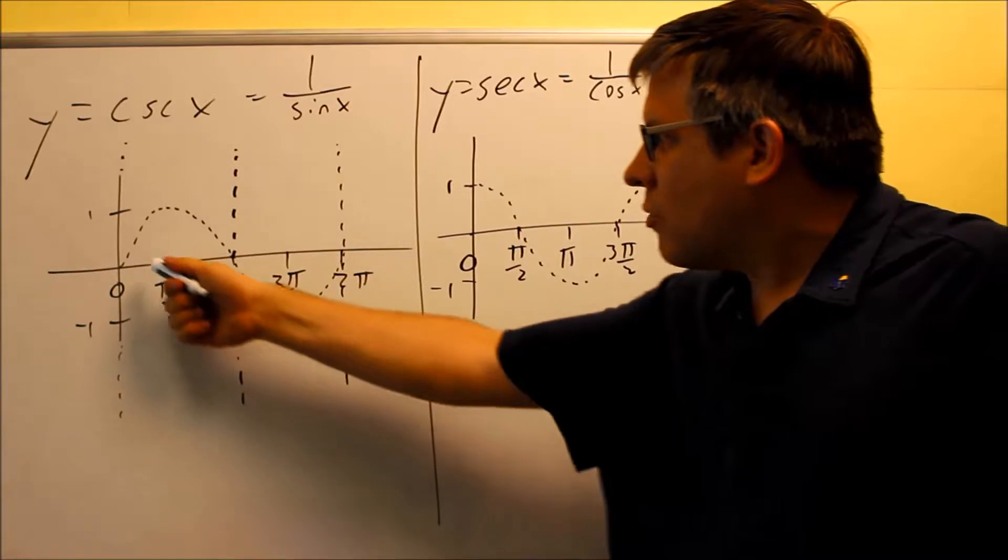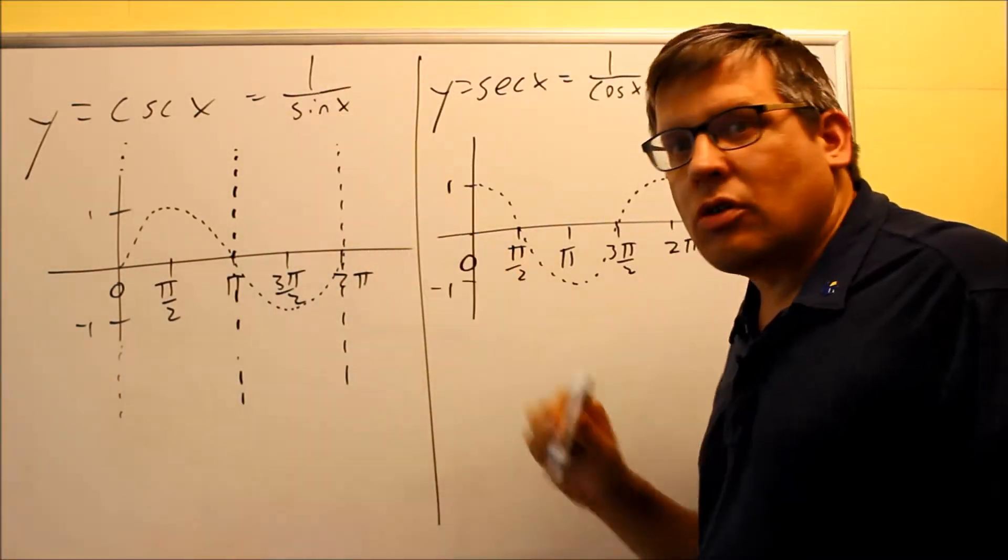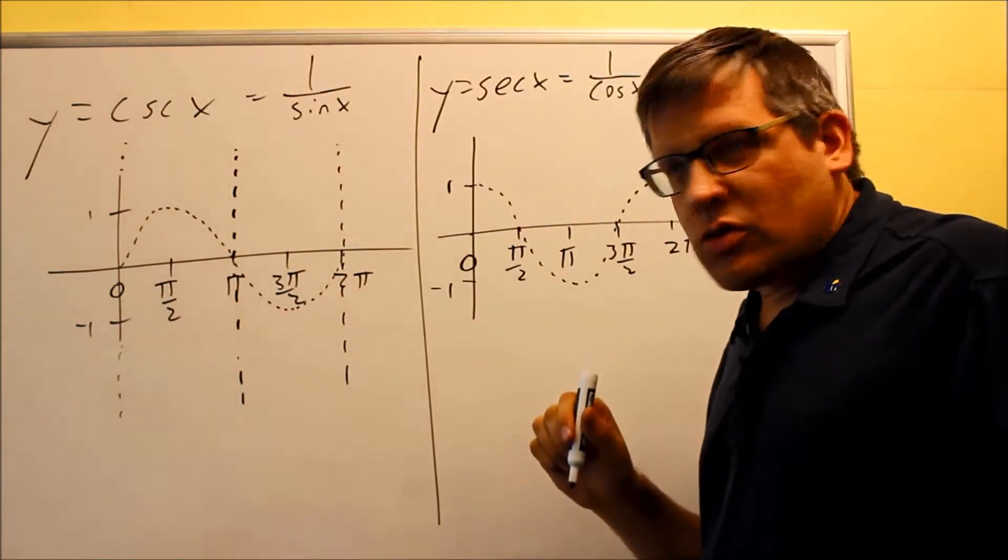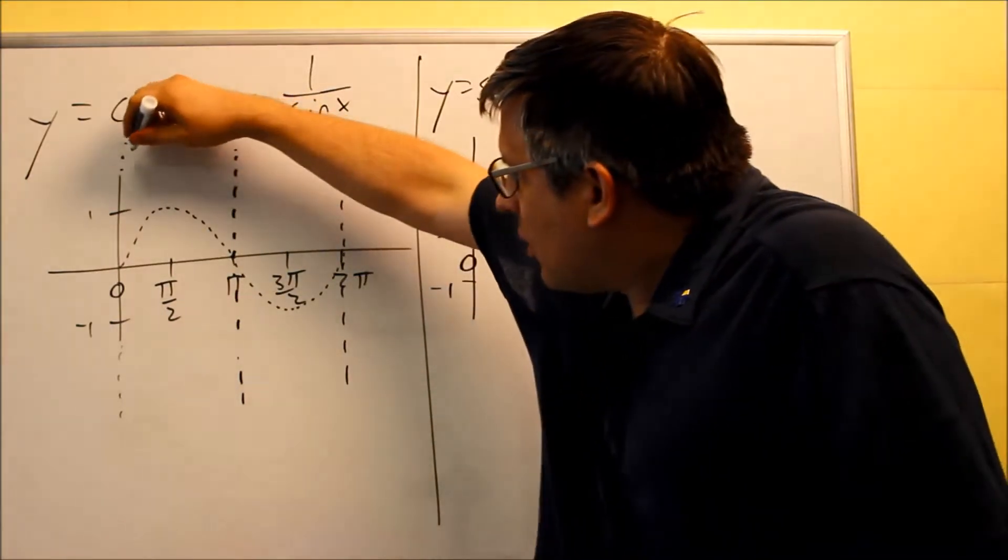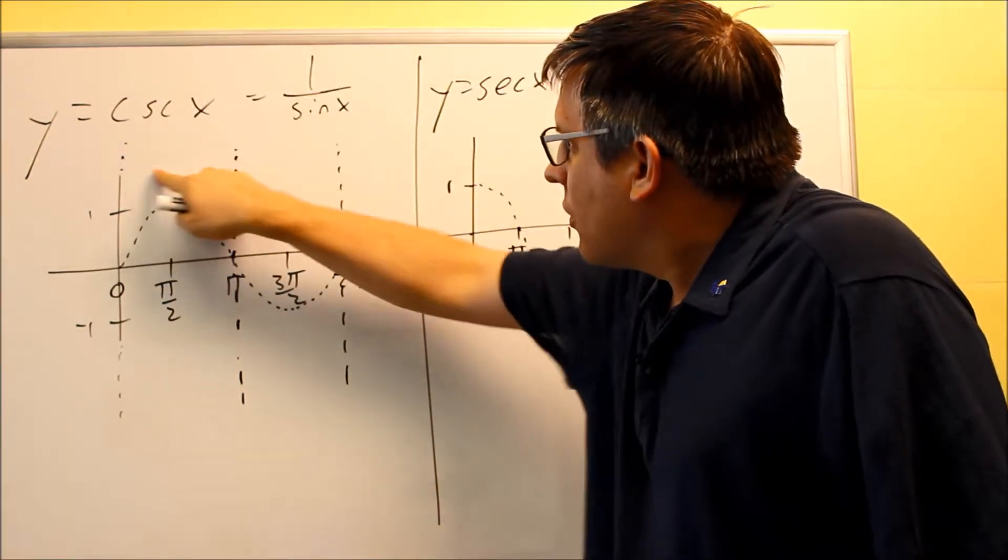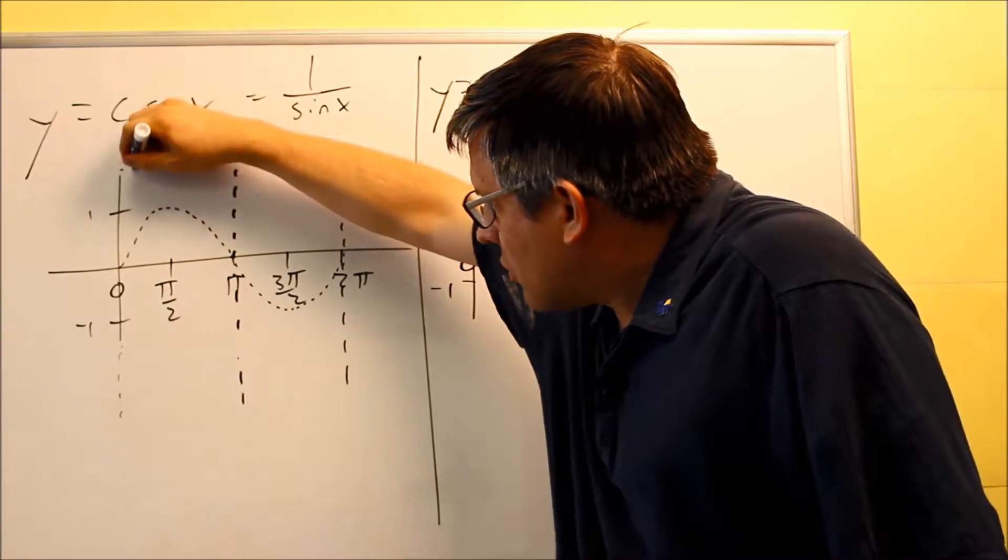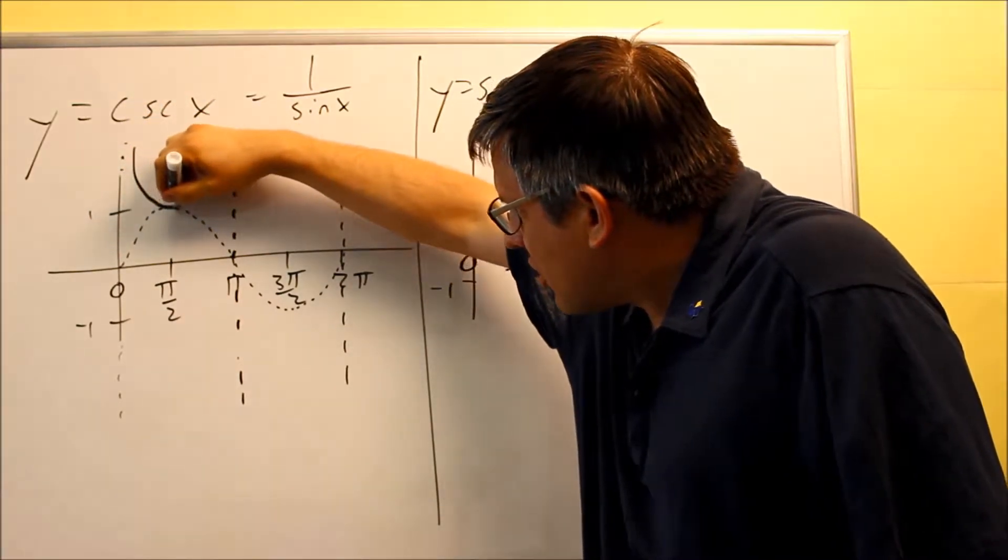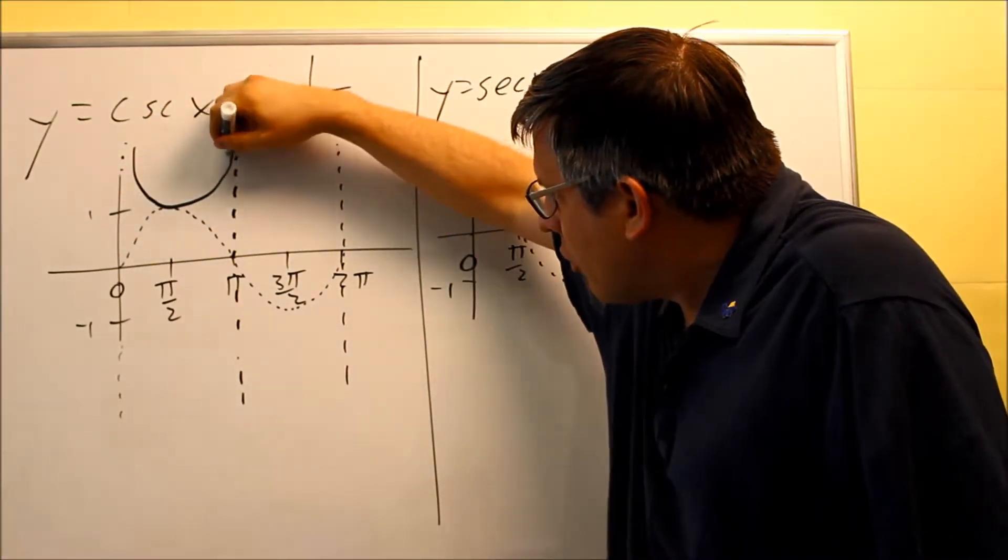We're going to have those again because that's where sine is 0, 1 over 0 is undefined. The graph itself for cosecant is going to be in between these two vertical asymptotes. It's going to come down, it'll touch the sine graph at the very top and then go up.